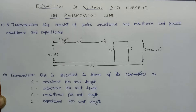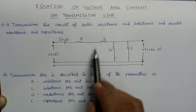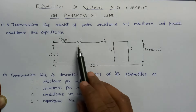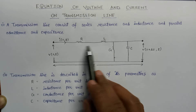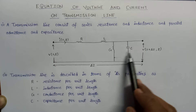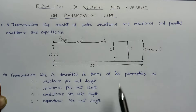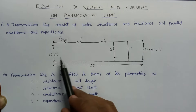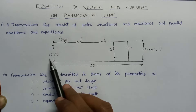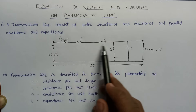Welcome. In this lecture we are going to learn about the equation of voltage and current on a transmission line. A transmission line consists of series resistance and inductance. Here is the diagram of a transmission line in which resistance and inductance per unit length are connected in series combination, and a parallel admittance and capacitance per unit length are connected in parallel combination. At the input of the transmission line we apply the voltage V(z,t), through which the current I(z,t) flows.